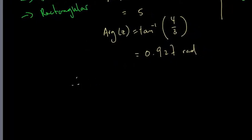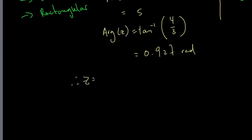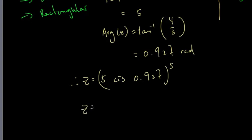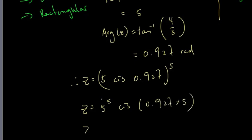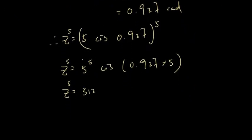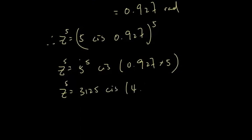Putting everything together, the polar form is Z = 5 cis 0.927, and we need this raised to the power of 5. Now applying De Moivre's theorem, that gives us 5⁵ cis(0.927 × 5), which equals 3125 cis 4.635.